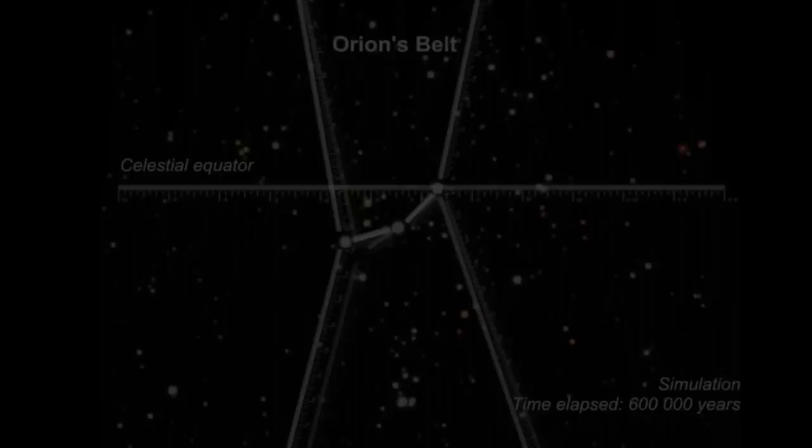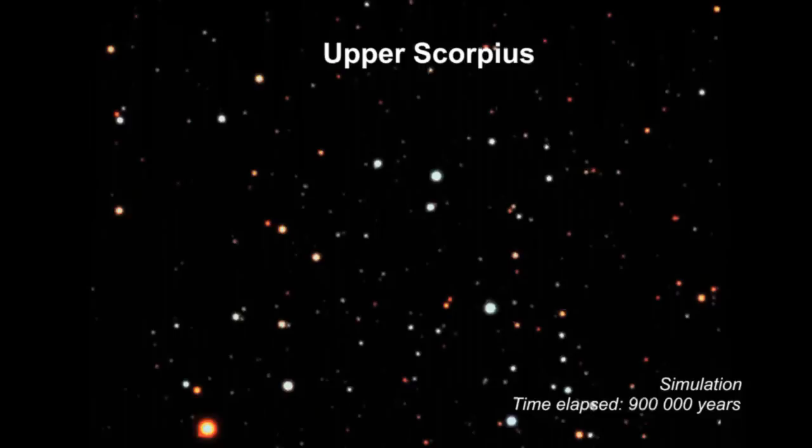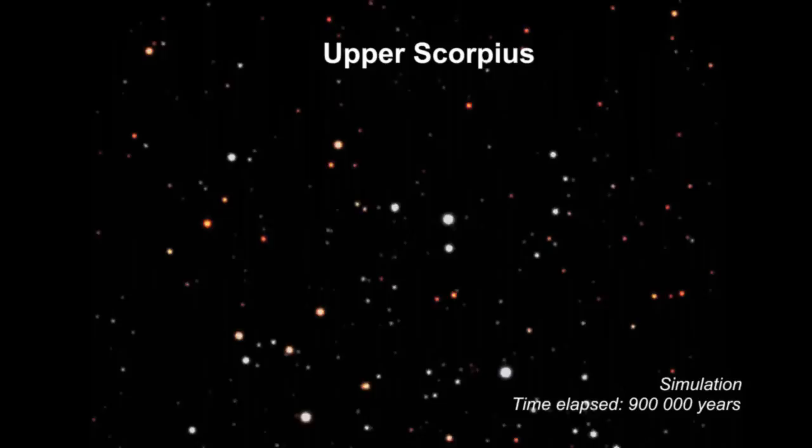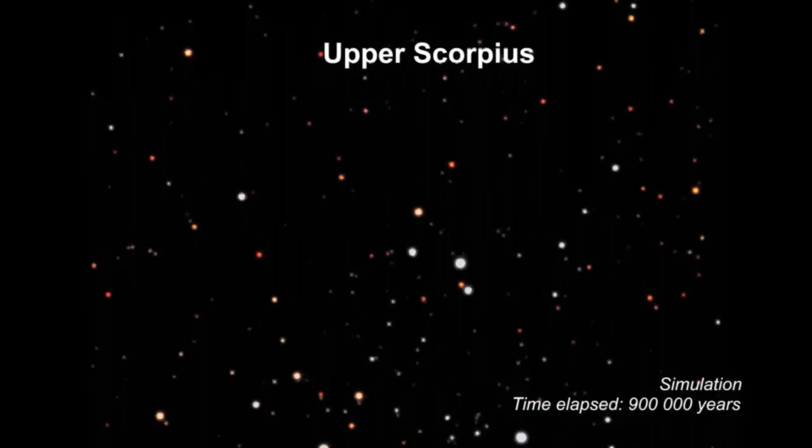Due to the vast distances to the stars, the proper motion of a star measured over a period of one year is extremely small. It could take a star thousands of years to move through the apparent size of the moon on the night sky.